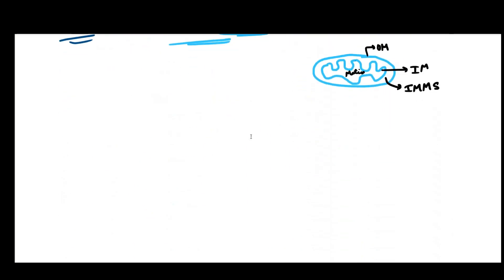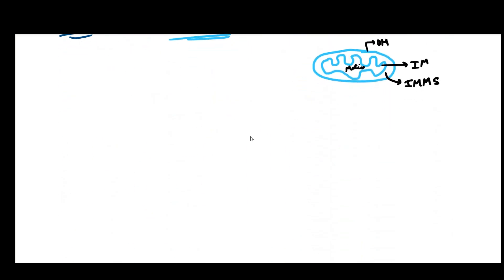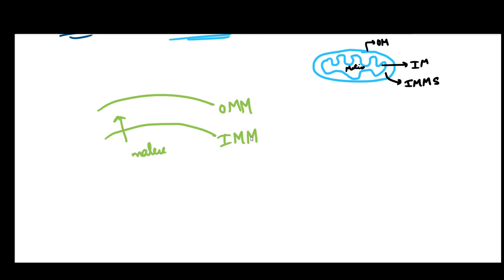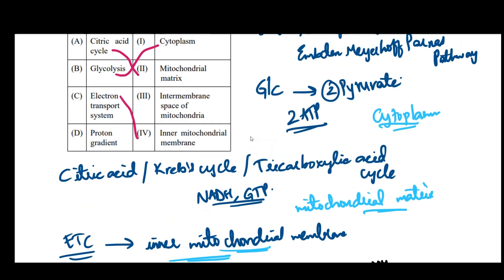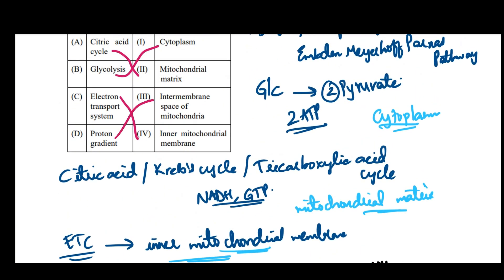Now, what is this proton gradient? If we magnify the two membranes of the mitochondria — the outer mitochondrial membrane and the inner mitochondrial membrane — what actually happens is protons get pumped out from the matrix into the mitochondrial intermembrane space. So there will be more proton molecules in the intermembrane space because they are being pumped out, and a proton gradient is generated in the intermembrane space of mitochondria.